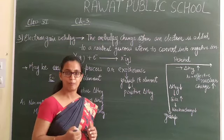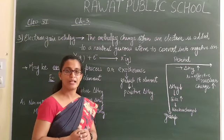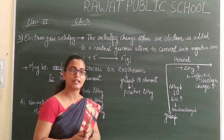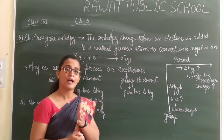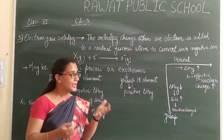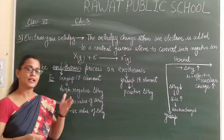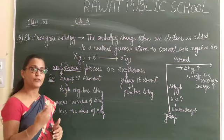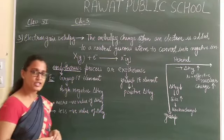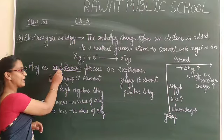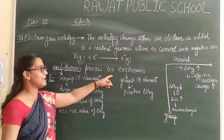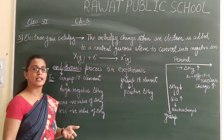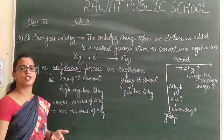Sometimes we have to add an electron to a particular element that is already in a stable electronic configuration, so it resists gaining that electron. In that condition, we have to supply extra energy. So for different kinds of elements, the electron gain enthalpy values differ. Generally, it may be exothermic or endothermic, depending on the electronic configuration of the element.